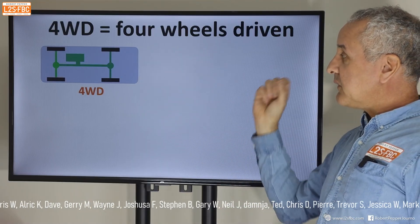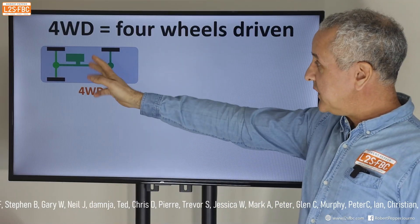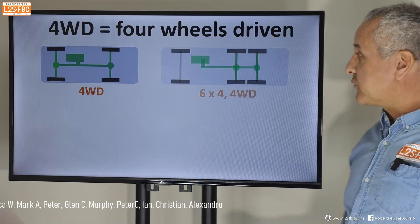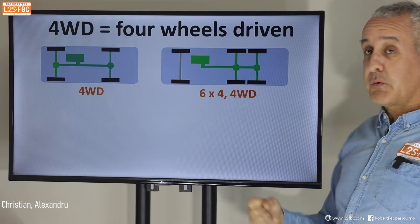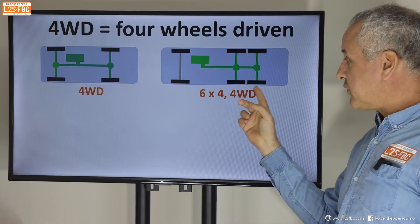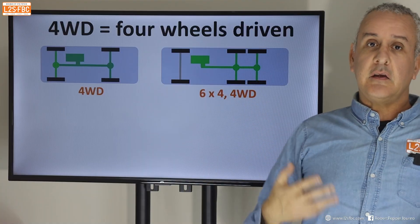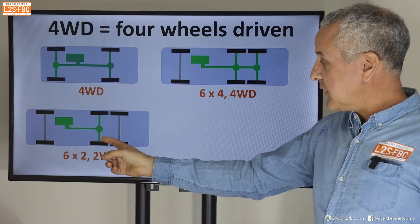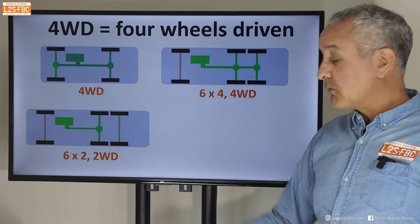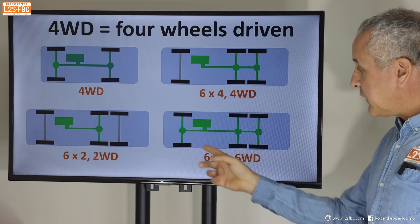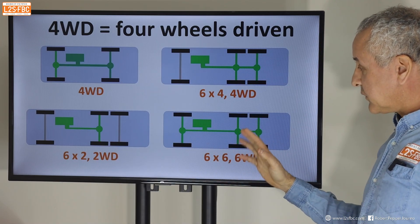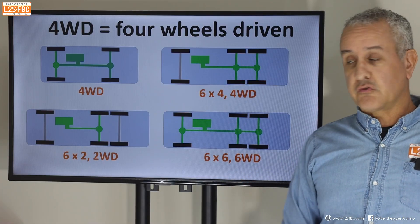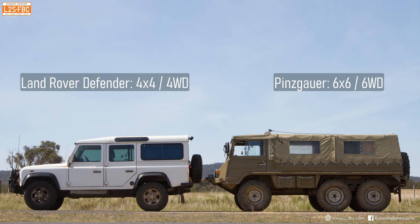So what is four-wheel drive? Is it different to four-by-four? Yes it is — it means four wheels driven. If we've got four wheels all driven, that is four-wheel drive. If we've got six wheels and four are driven, that is also four-wheel drive. If we've got six wheels and only two are driven, that is two-wheel drive. And if we've got six wheels and all are driven, then that's not four-wheel drive — it is six-wheel drive.